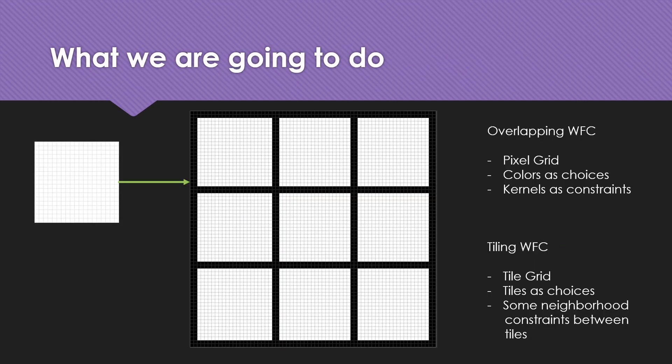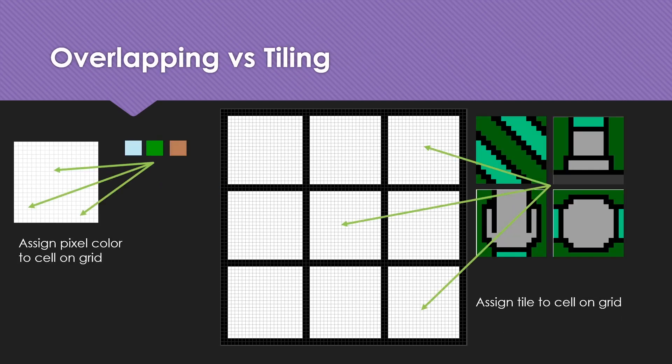So that is what we are going to do. From overlapping wave function collapse, instead of using a pixel grid, we are now going to use a tile grid. We will use color as choices in the pixel case, but in the tiling case, use tiles as choices. In the tiling wave function collapse model, we do not wish to split the image into kernels. Instead, we expect neighborhood constraints in the form of tile adjacency.